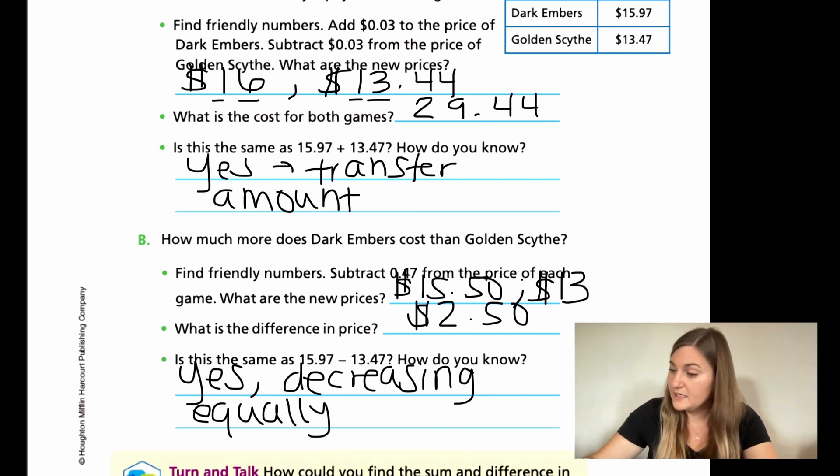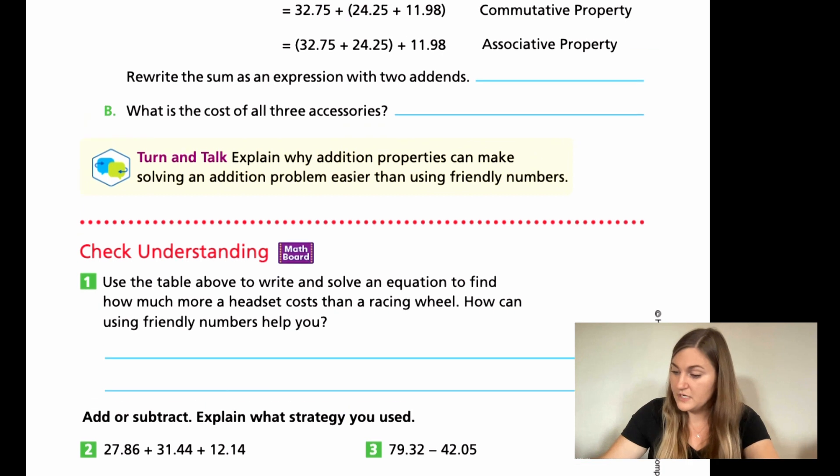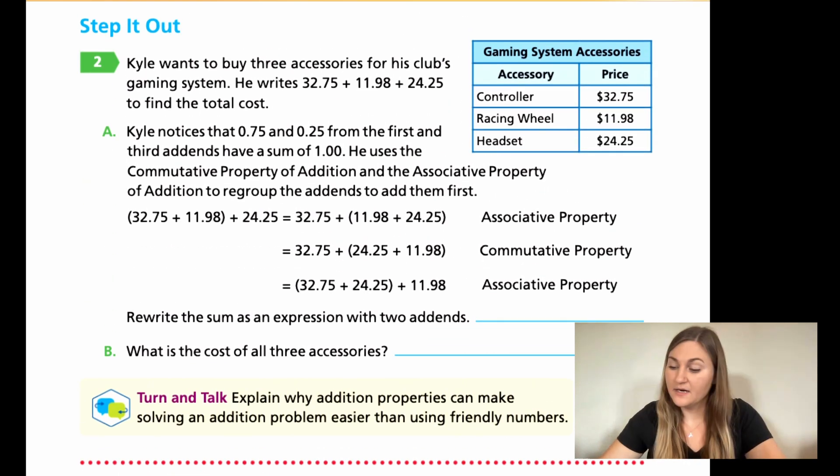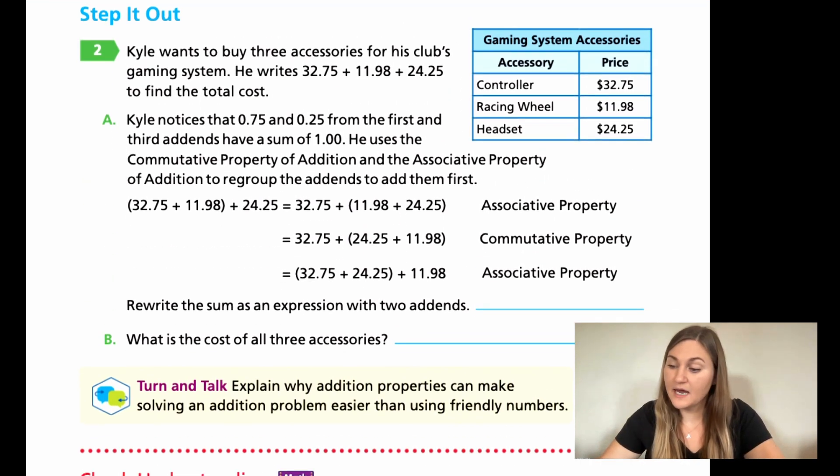Let's go ahead and flip the page. We're going to be on page 360. So we have a step it out. Number two, Kyle wants to buy three accessories for his club's gaming system. He writes 32.75 plus 11.98 plus 24.25 to find the total cost. Those are just the three from the chart.